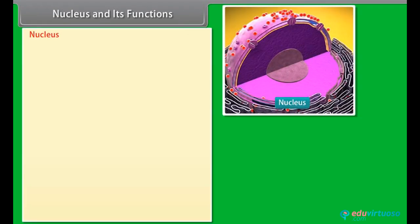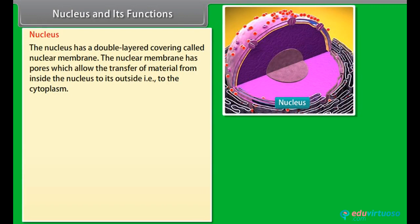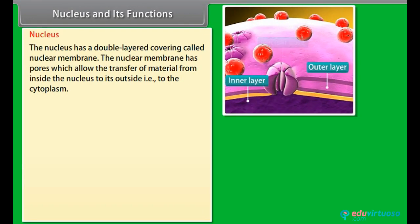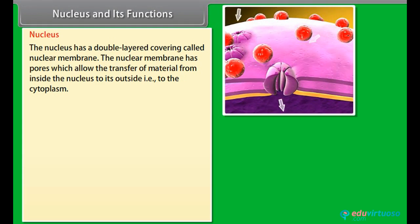Nucleus and its functions: The nucleus has a double-layered covering called the nuclear membrane. The nuclear membrane has pores which allow the transfer of material from inside the nucleus to its outside, that is, to the cytoplasm.